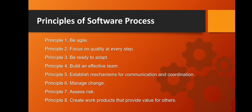Principle four: build an effective team. Software engineering process and practice are important, but the bottom line is people. Build a self-organizing team that has mutual trust and respect. Principle five: establish mechanisms for communication and coordination. Projects fail because important information falls through the cracks and stakeholders fail to coordinate their efforts to create a successful project. These are management issues and they must be addressed.